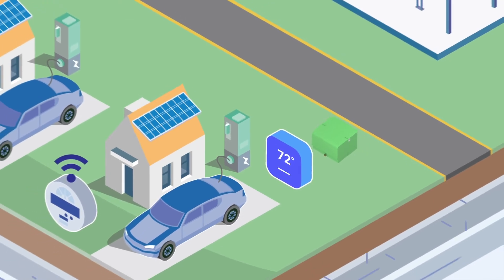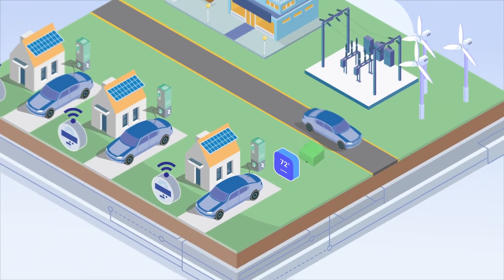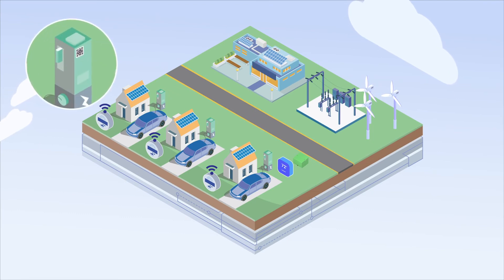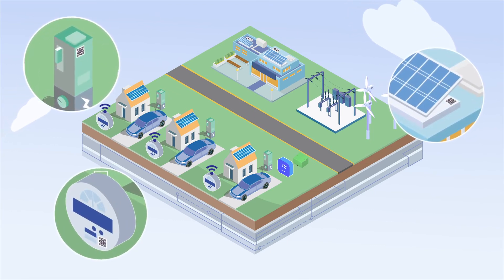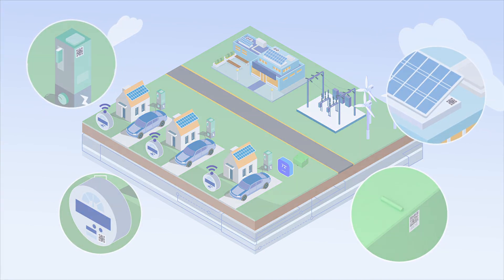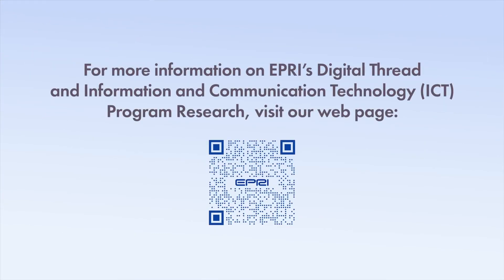As Portland General Electric and other utilities address the demands of the 21st century grid, new and novel technologies such as barcoding-based as-builts and digital threads can help them rise to the challenge. For more information on EPRI's digital thread and information and communication technology program research, visit our web page.